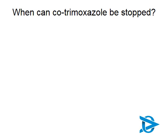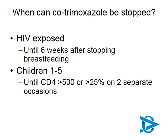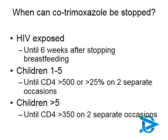Regarding when to stop co-trimoxazole: for HIV-exposed infants, continue throughout breastfeeding — only once six weeks after breastfeeding ends and HIV status is confirmed negative can Bactrim be stopped. For HIV-infected children between one and five years, consider stopping once CD4 is consistently above 25%. For children over five, similar to adults, wait until CD4 is consistently above 350.